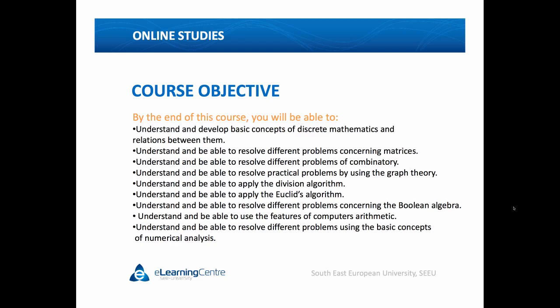To understand and be able to apply Euclid's algorithm. Then, to understand and be able to resolve different problems concerning Boolean algebra — we'll define what Boolean algebra is and how we can use it. Then, to understand and be able to use the features of computer arithmetic. And finally, to understand and be able to resolve different problems using the basic concepts of numerical analysis — especially to solve equations using the Bisection method, the Fixed Point method, and the Newton-Raphson method.